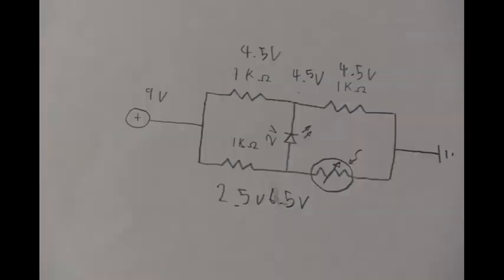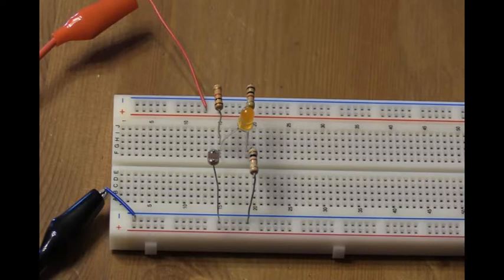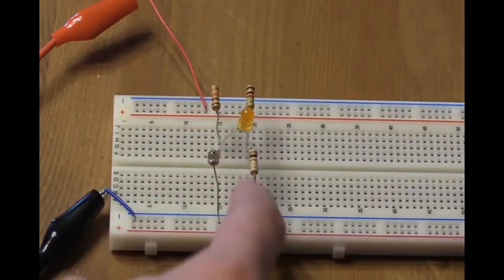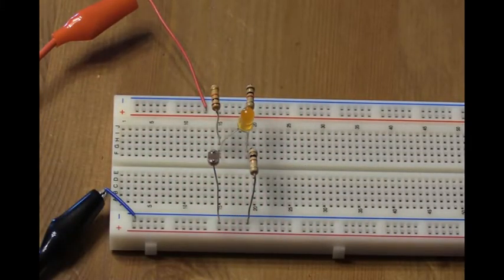And now we'll demonstrate how the circuit works. As you can see the circuit follows the diagram. Here are the three 1,000 ohm resistors. Here's the LED bridging the gap. And the photoresistor.